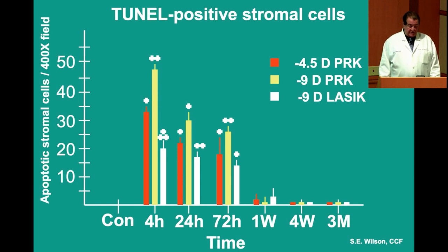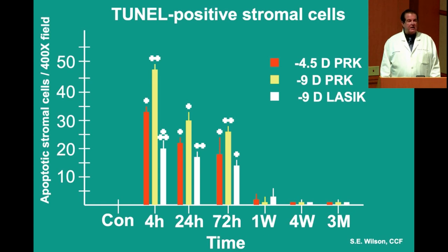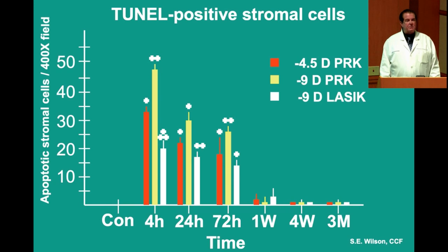If we graph time points versus the amount of apoptotic cells per 400x field, a nine-diopter PRK has a much larger apoptotic effect than a four-and-a-half diopter PRK — a much greater wound healing response with higher correction. And LASIK with a nine-diopter correction is much less than any of the PRKs.